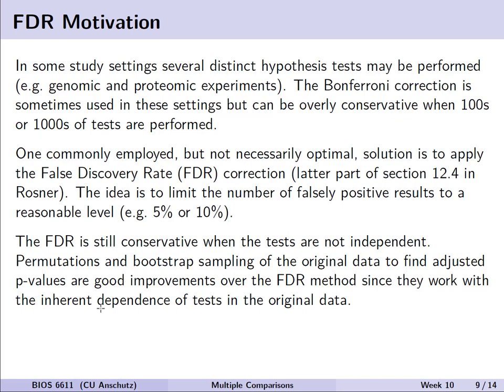The Bonferroni correction is sometimes used, but as noted, it can be overly conservative, especially if we're doing hundreds or thousands of tests. To address this, we can instead control the false discovery rate, or FDR, with a correction discussed in section 12.4 of Rosner. The general idea is that we want to limit the number of falsely positive results to some reasonable level, like 5 or 10 percent, depending on our general alpha threshold.